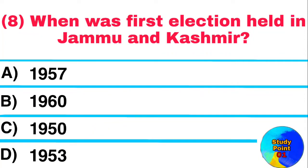Question: When was the first election held in Jammu and Kashmir? Answer: 1957.